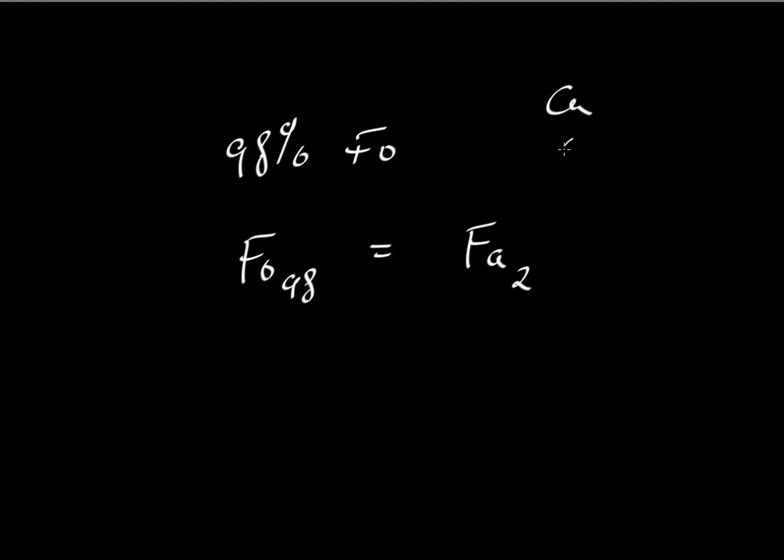Again, we're ignoring calcium and manganese and nickel and other things that go into olivine. So if we ignore all that stuff, then Fa2 would be the same as Fo98. This is the typical way that we would write these kinds of mineral compositions.